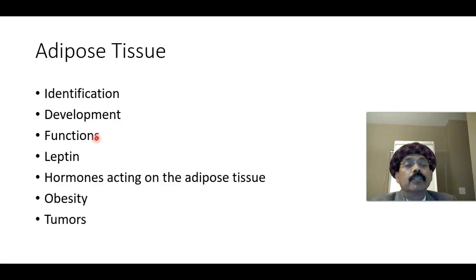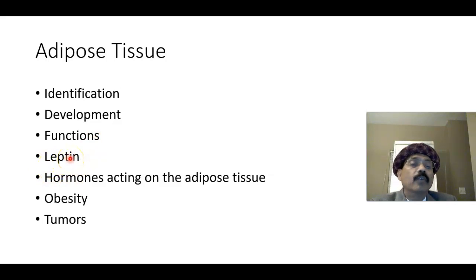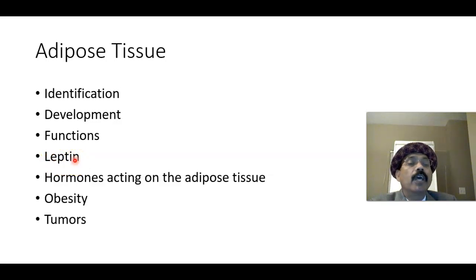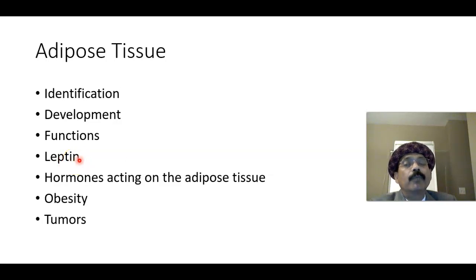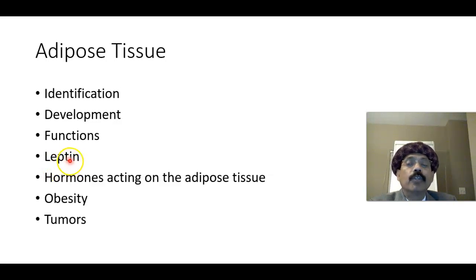In the newborn, brown adipose tissue may be around 5% of body weight. In adults, brown adipose tissue is absent except around the kidney and adrenal gland. Leptin is a hormone-like protein released from the white adipose tissue. Leptin stimulates the metabolism of carbohydrate and fat, and also acts on the satiety center of the hypothalamus — making it anorexic — thus decreasing appetite and regulating body weight.